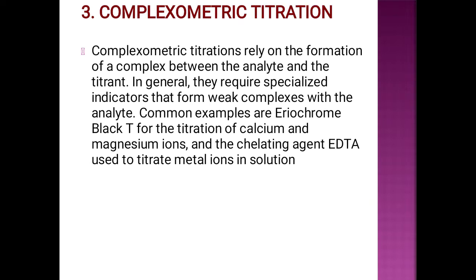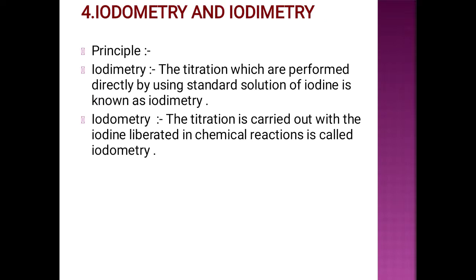The third type is complexometric titration, which depends on complex formation between the analyte, reagent, and titrant. This reaction requires a special indicator because it involves a weak complex. This special indicator is called Eriochrome Black T, used for the titration of calcium and magnesium with the chelating agent EDTA — that is, ethylenediaminetetraacetic acid.